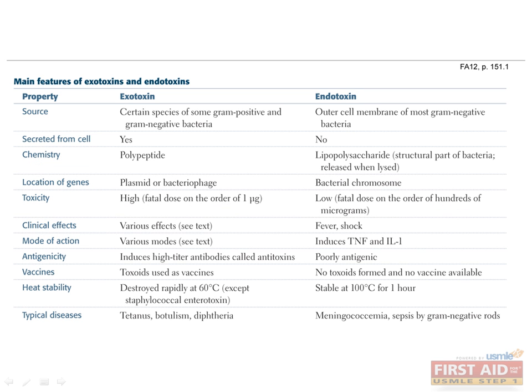Review this table to understand the basic differences between exotoxins and endotoxins. The most important difference is that endotoxins are found only in gram-negative organisms within the outer membrane, while exotoxins are proteins or polypeptides that are secreted from bacteria and can have a variety of effects depending on the target.